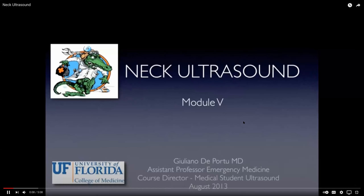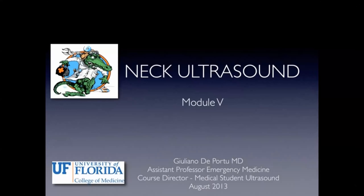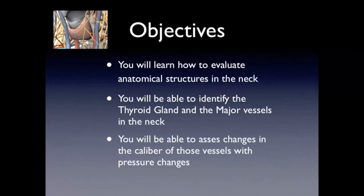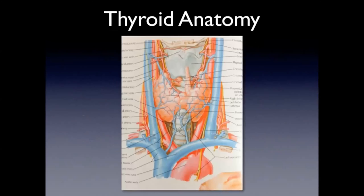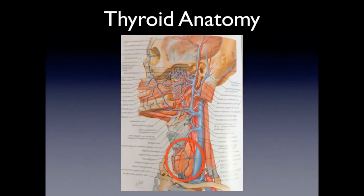Welcome to the University of Florida ultrasound module for medical school — this is the neck ultrasound, module number five. You're going to learn how to evaluate the anatomical structures in the neck, mainly the thyroid gland and the vessels lying next to the gland, and you'll be able to see changes in the caliber of those vessels with pressure changes. The thyroid gland is located in the inferior aspect of the neck, anterior to the trachea, and mainly has three lobes — right, left — connected by the isthmus. The common carotid vessels along with the internal jugular lie lateral to the lobes.